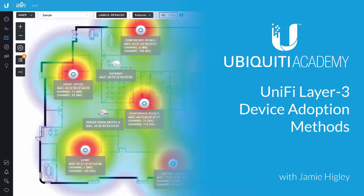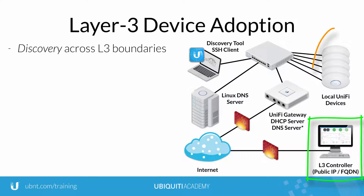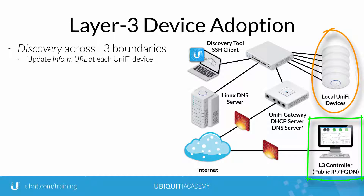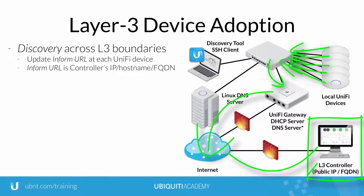In order for the Unify controller to discover and adopt Unify devices over Layer 3 network boundaries, each device must be configured with updated Inform URL settings. The Inform URL represents the network address of the Unify controller and can therefore point to any reachable network address belonging to the controller, including IP address, hostname, or even a fully qualified domain name.